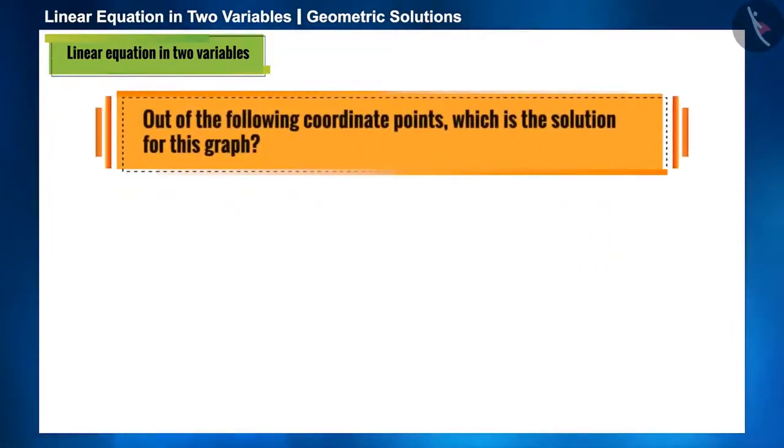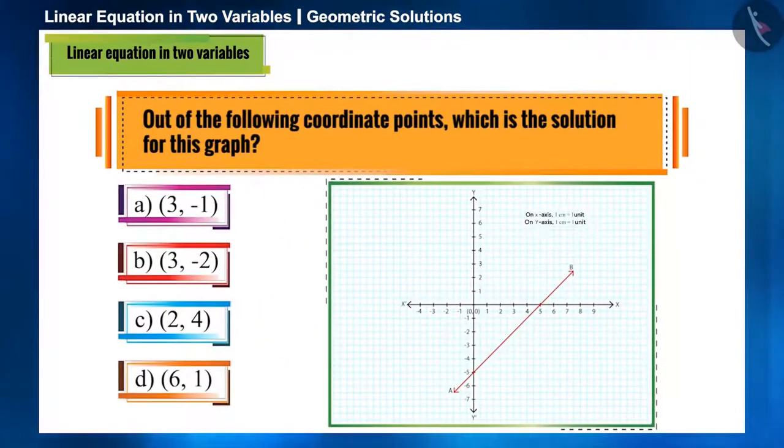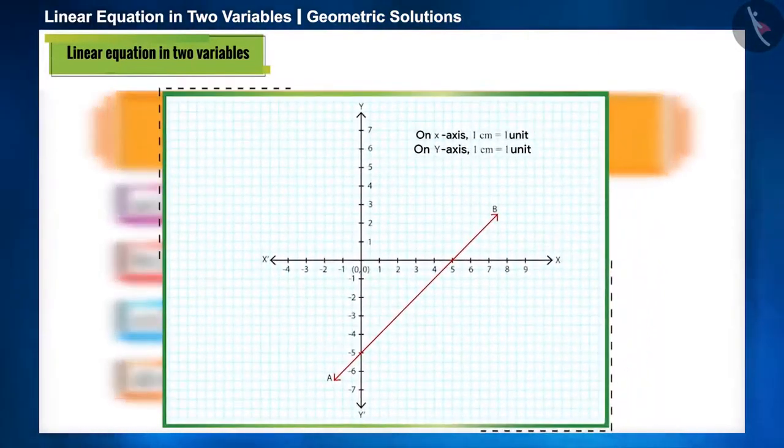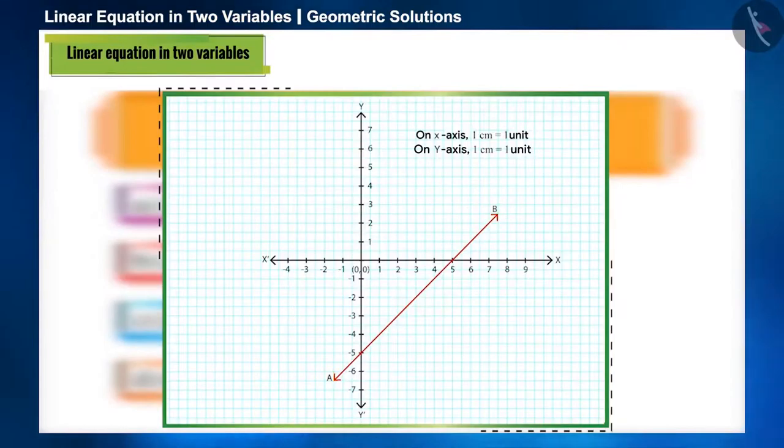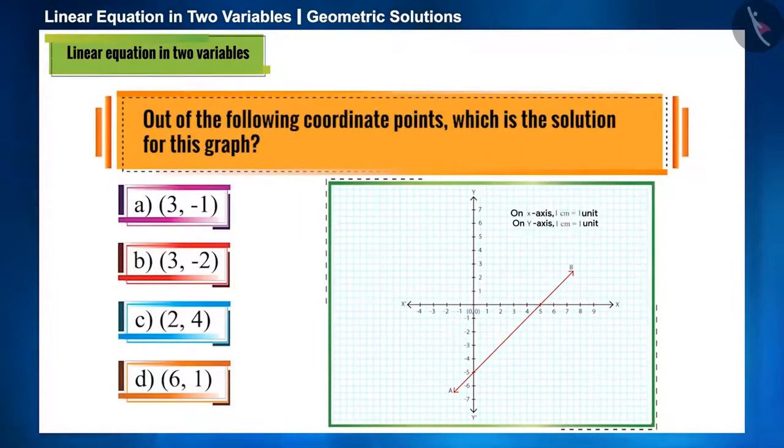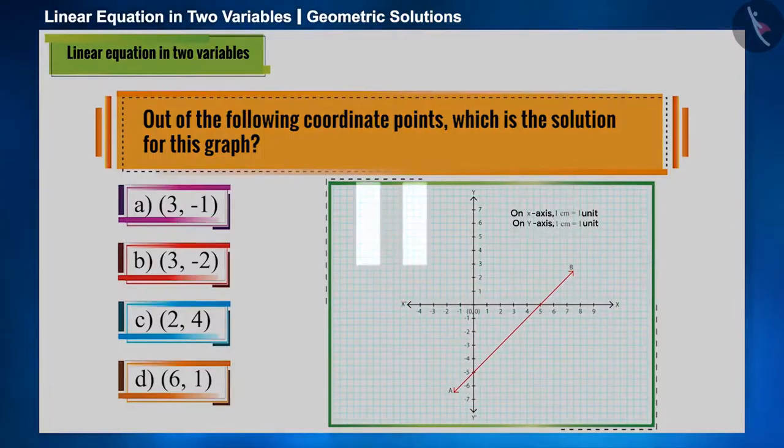Let's look at the first question. Out of the following coordinate points, which is the solution for this graph? Friends, here only line AB is given, but its equation is not given. In which, let's substitute this coordinate point and check whether it is a solution or not. So, what should we do now? You can think of an answer by pausing this video.